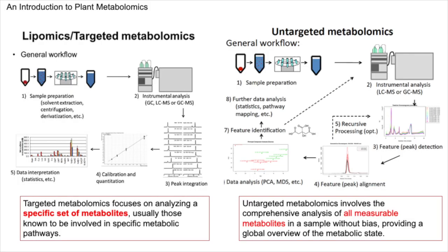Targeted metabolomics is a focused approach where we quantify a specific set of known metabolites — it's like having a shopping list at a grocery store. In the lab, this translates to meticulous sample preparation involving steps like solvent extraction, centrifugation, and derivatization to prepare the selected metabolites for analysis. Instrumentation like GC, LC-MS, or GC-MS then precisely measures these metabolites. Untargeted metabolomics, on the other hand, is more like taking a panoramic photograph of everything available — we capture all metabolites present in a sample, which is particularly useful for discovering new biomarkers or getting an unbiased look at the metabolome.